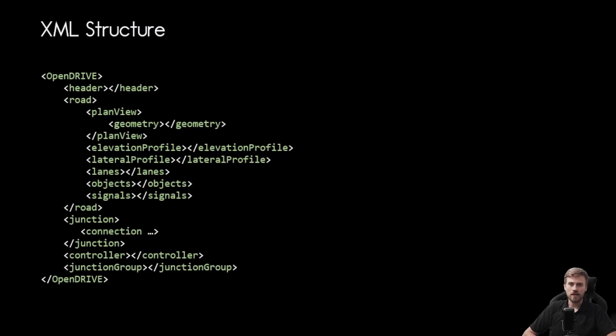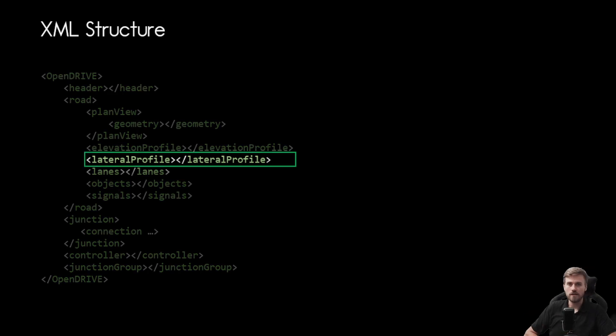So first of all we need to check out our high level XML structure and here we can find the shape entry that represents our road shape within the lateral profile. If you're interested in all the other attributes you can see here you can check out my video about what is OpenDrive and I will put a link in the video description. But now let's get into the lateral profile because that's what's going to be interesting for today.